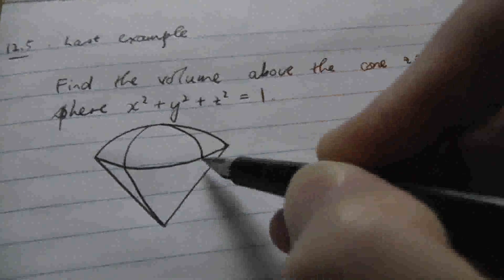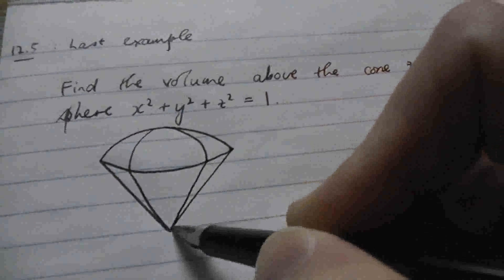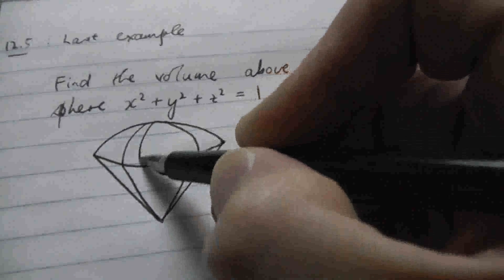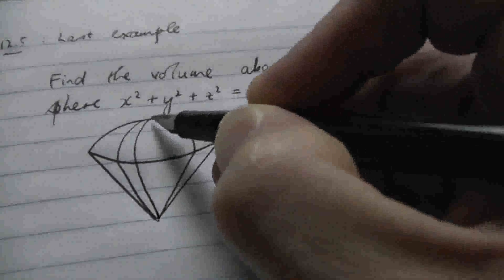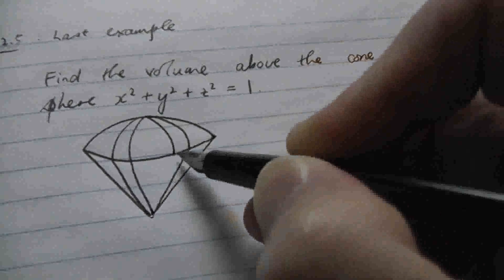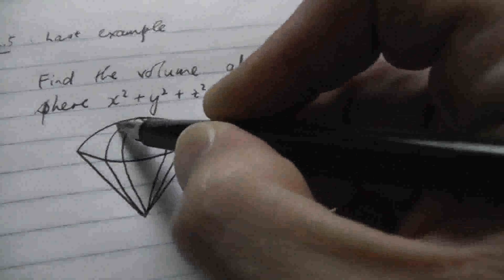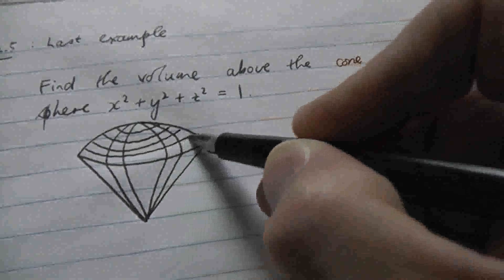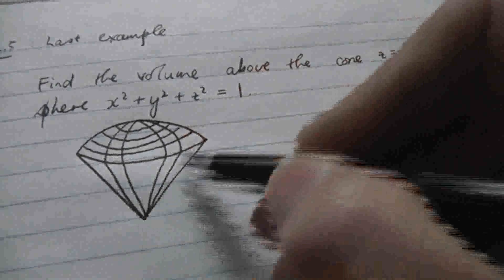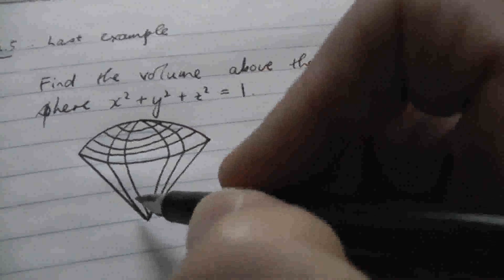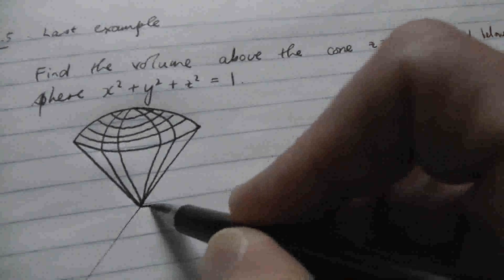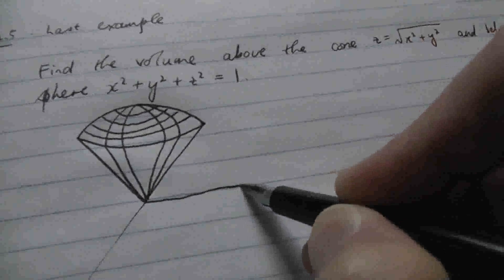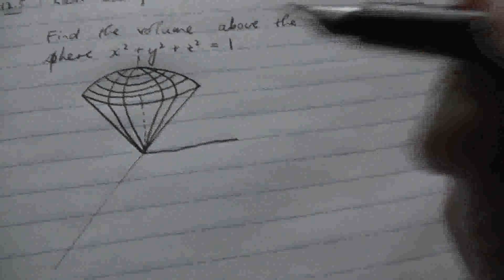As you watch this, a good idea might be to follow along by sketching with me, writing the stuff down with me, keeping a step ahead of me if you can. So we have the sphere, the sphere of radius 1, and it's the ice cream part of our ice cream cone. Now, so this is in three dimensions, three dimensional space, so we have the z axis here.